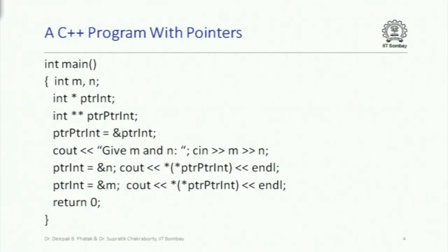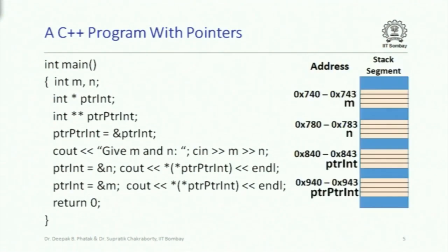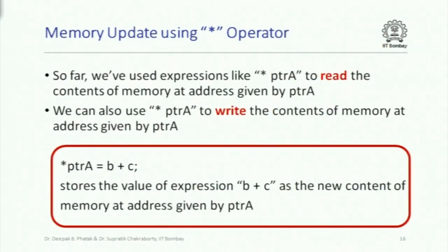We will just skip it because this is actually completely straightforward. There is a pointer int which takes the value of n, then the value of m, and pointer pointer int always points to pointer int. So star pointer pointer int is pointing to pointer int, and pointer int is pointing to n or m, and so the values of n and m are printed out.